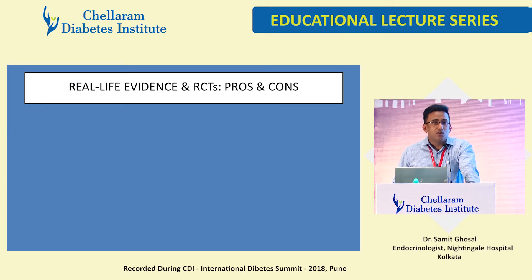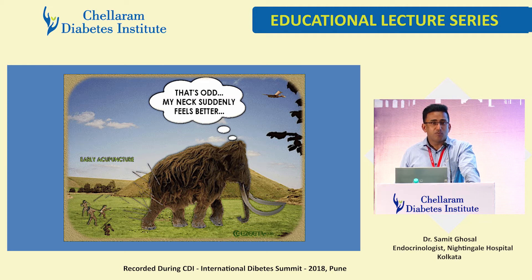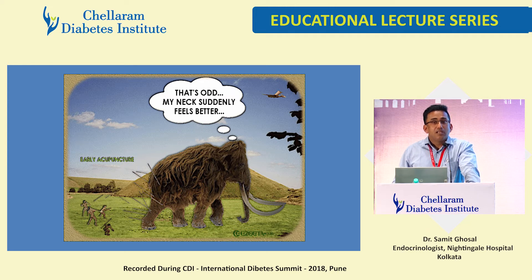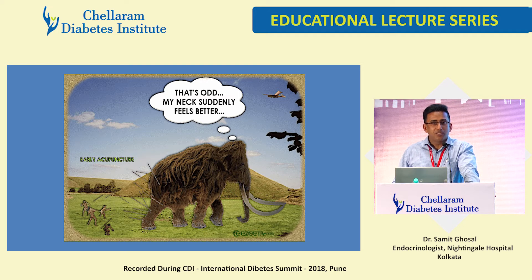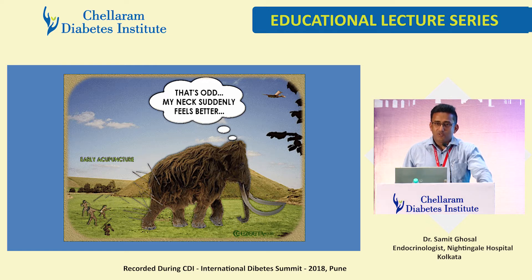If you look at the pros and cons of RCTs versus real-life evidence — here's an analogy: a mammoth being pierced by spears and its neck pain suddenly disappears. That's real-life evidence. But the people were throwing spears to kill it, not to cure neck pain. The basic aim was different. This is like Unani or Ayurveda — you might aim for one thing but end up with something else.